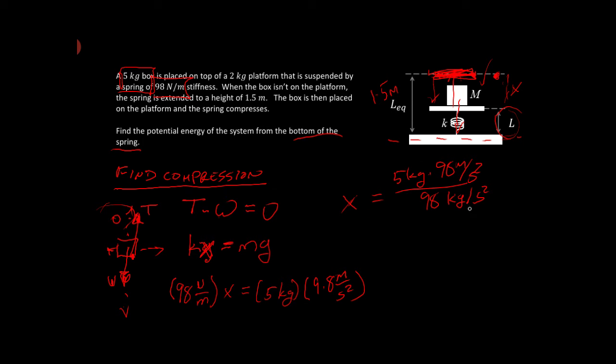So our compression is now given by this formula. That's just a mathematical operation, a little bit of arithmetic. So we have 5 times 9.8 divided by 98. Well, I know that one, that's one-tenth. 9.8 divided by 98 is one-tenth times 5. So that's equal to half a meter, 0.5 meters, that's 50 centimeters.